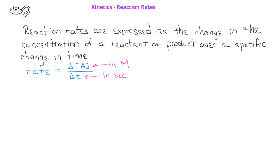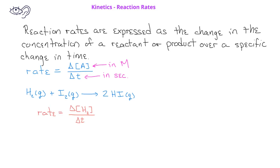Let's look at an example reaction where we have one mole of hydrogen gas reacting with one mole of iodine gas to produce two moles of hydrogen iodide gas. We could determine the rate of this reaction by writing that the rate is equal to the change in the concentration of hydrogen over some change in time, or by the change in the concentration of iodine over the change in time.